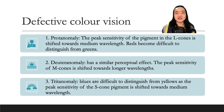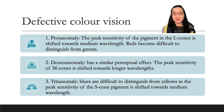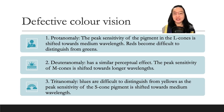Defective color vision. Protanomaly: the peak sensitivity of the pigment in the L-cones is shifted towards medium wavelength, making reds difficult to distinguish from greens. Deuteranomaly has a similar perceptual effect — the peak sensitivity of M-cones is shifted towards longer wavelengths. Tritanomaly: blues are difficult to distinguish from yellows as the peak sensitivity of the S-cone pigment is shifted towards medium wavelength.